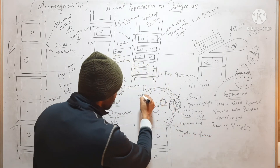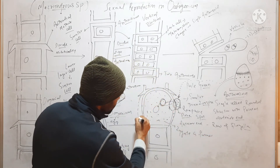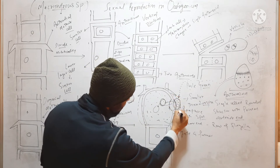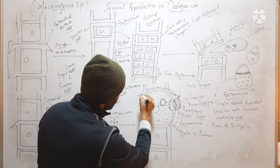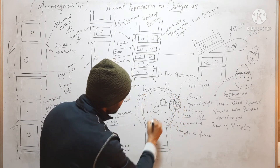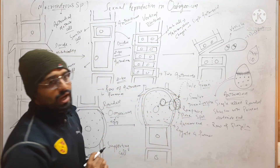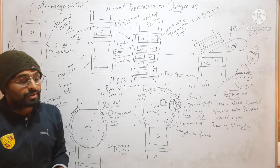After formation of the zygote, it will secrete a thick wall around itself.